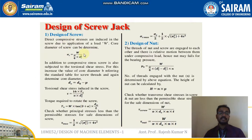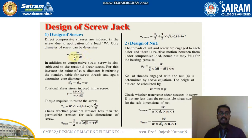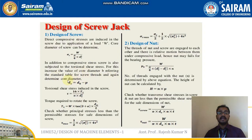The very first step in the design procedure is the design of the screw, where direct compressive stresses are induced due to the application of load W. The core diameter of the screw is determined from: σC = W / (π/4 × DC²). In addition to compressive stress, the screw is also subject to torsional shear stress. To account for this, increase the value of core diameter by referring to the standard table for screw threads, then determine the core diameter: DC = DO − P.